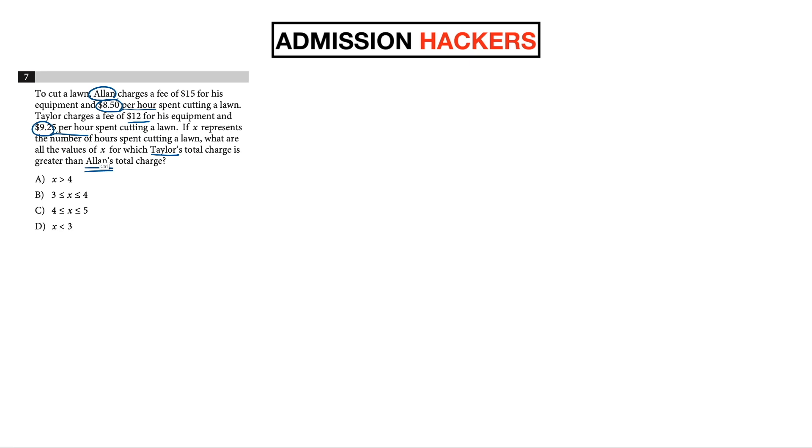When you're ready, let's look at it. So the question is asking, we're looking for the value of X and X represents the number of hours spent cutting the lawn. What's the value of X for which Taylor's total charge is greater than Alan? So we're essentially looking for Taylor is greater than Alan. And how do we find it? Let's think about what Taylor's charge is and what Alan's charge is. For Alan, it's going to be $15 plus 8.5 per hour, so you multiply by H. And Taylor is going to be $12 plus 9.25 per hour. And to make sure it fits the question, let's change the H's into X because X represents the hour in this case.